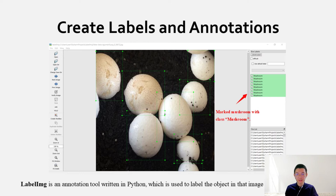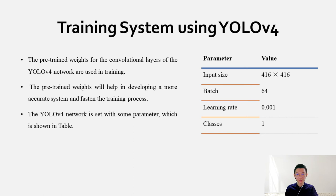After getting the dataset, we can now proceed with training. The system is trained by using pre-trained weights for the convolution layer for the YOLO v4 network. The pre-trained weight helps in developing a more accurate system and fastening the training process. Before starting training, some important parameters need to be set which is shown in the table.